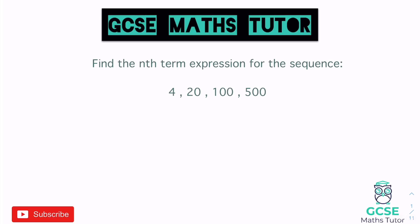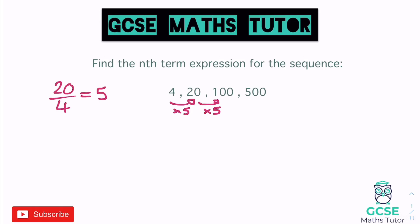So this first one says find the nth term expression for the sequence, and we've got 4, 20, 100, and 500. When it comes to a geometric sequence, what we need to have a look at is what we are multiplying each term by to get to the next one. You just take the bigger term and divide it by the smaller term before it. So 20 divided by 4 gives us 5, so we must be multiplying by 5 each time. Always double check — 20 to 100 is also times by 5.